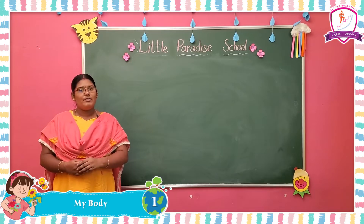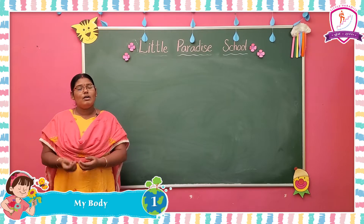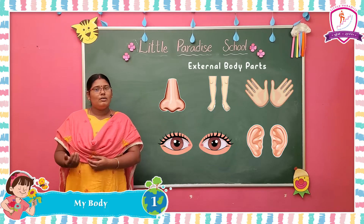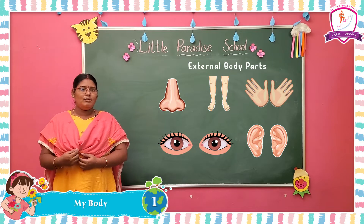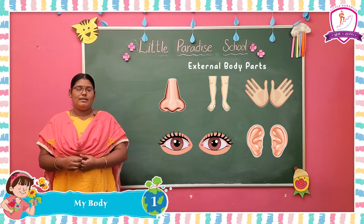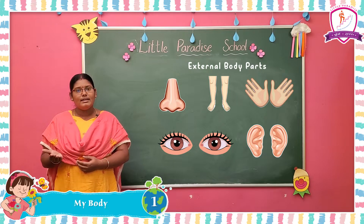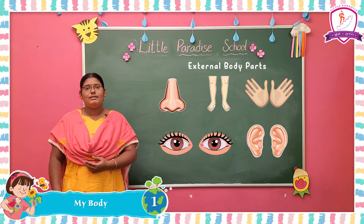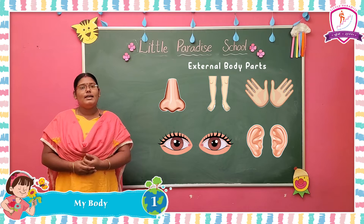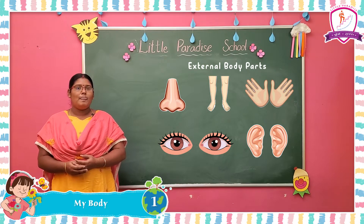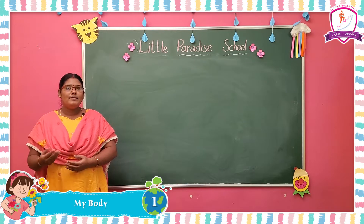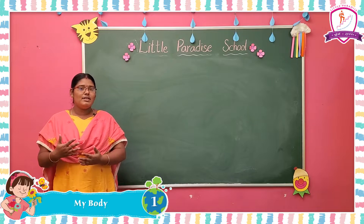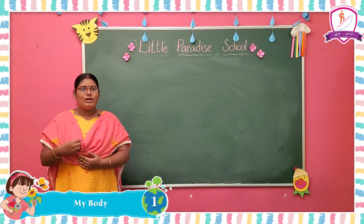The parts of our body that we can see are called external body parts. Our body has external as well as internal body parts. External body parts are the parts that are visible on the outside of our body. Internal body parts are inside and not visible.